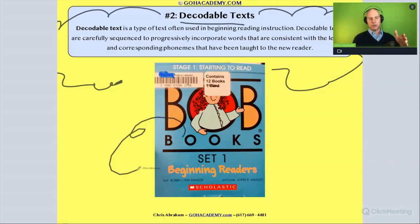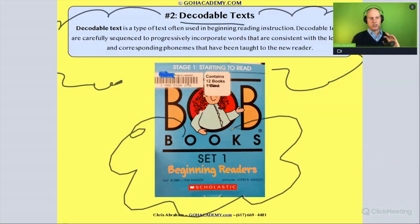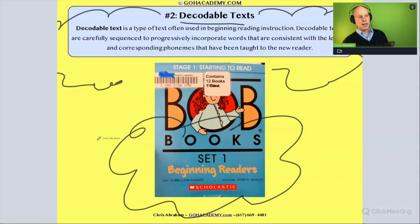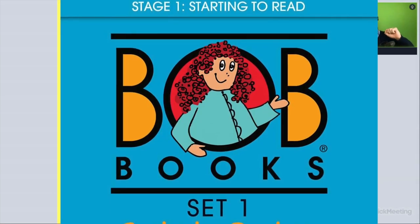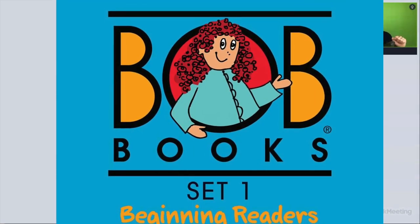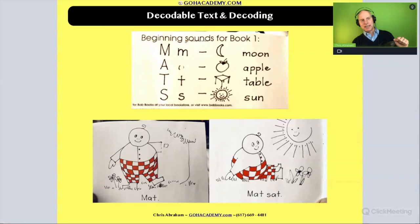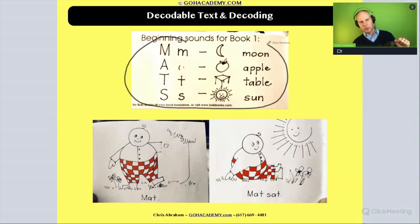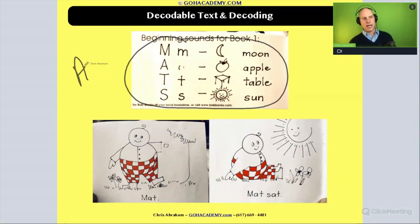Here's an example. This book is called Bob Books. These are very common for beginner readers — I'm going to put down here kindergarten, or ages five through six. This is one of the first books they have, and it reviews letter-sound relationships in the alphabetical principle.